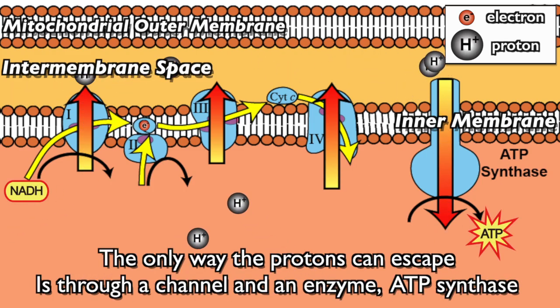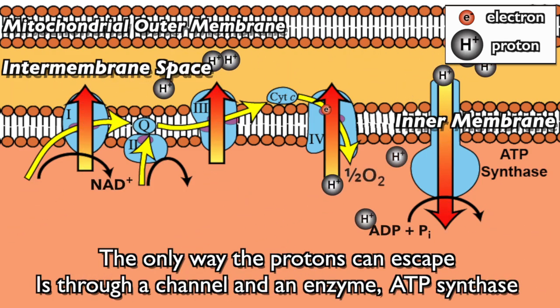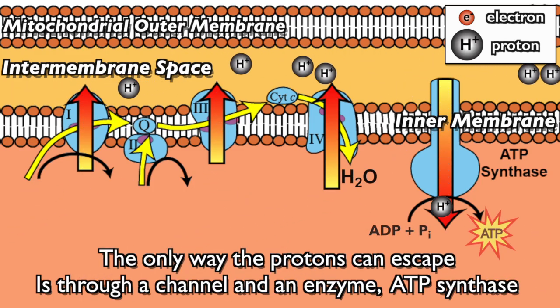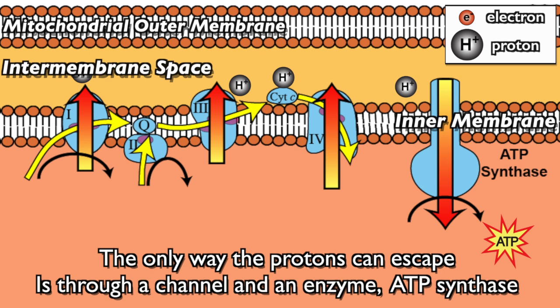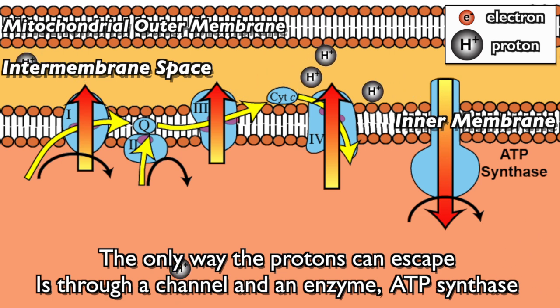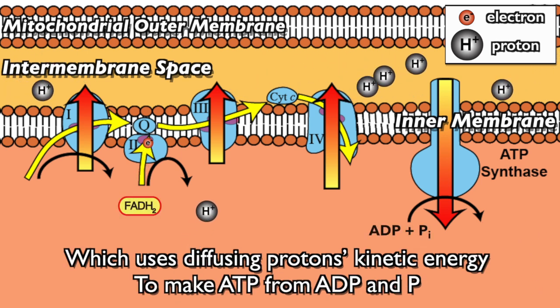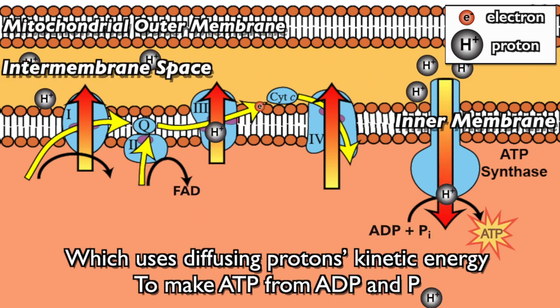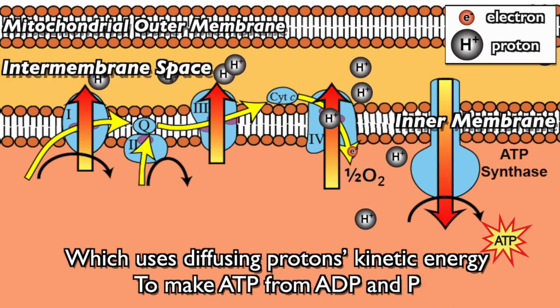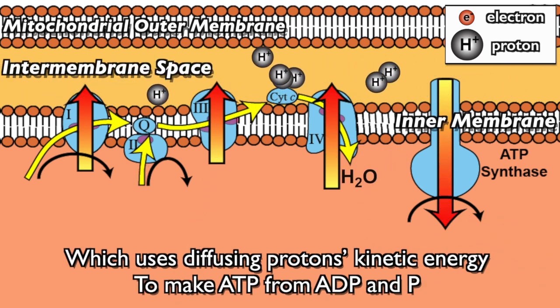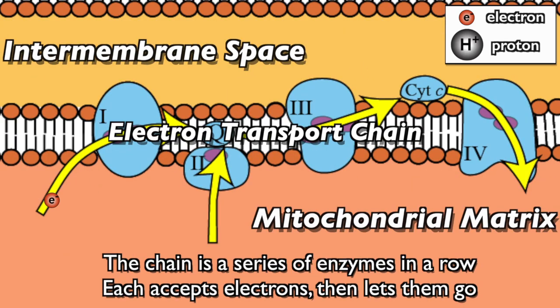The only way the protons can escape is through a channel and an enzyme — ATP synthase — which uses diffusing protons' kinetic energy to make ATP from ADP and P.